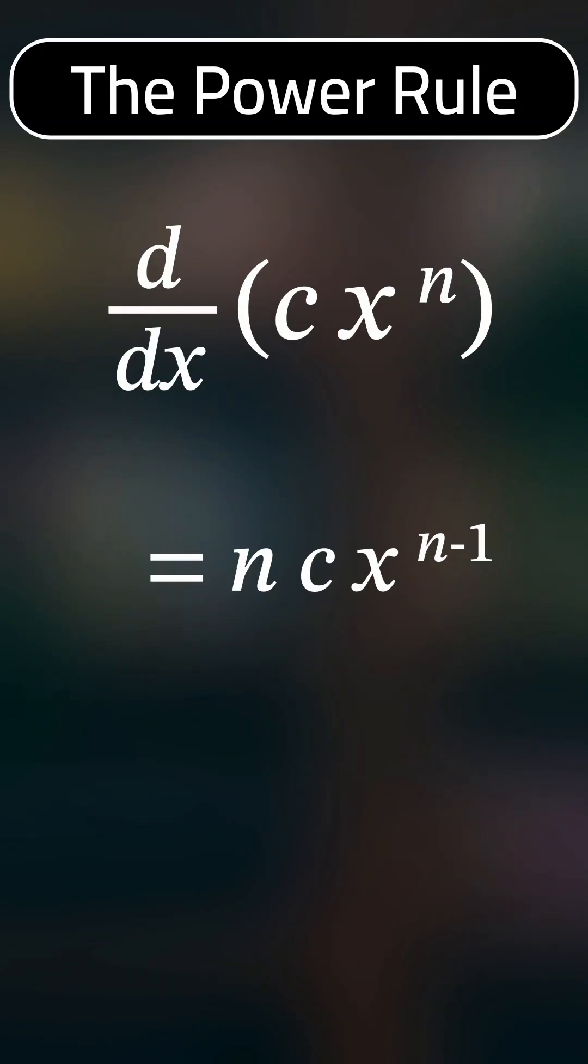To differentiate a term in our polynomial, we multiply the coefficient by the exponent and then subtract 1 from the exponent.